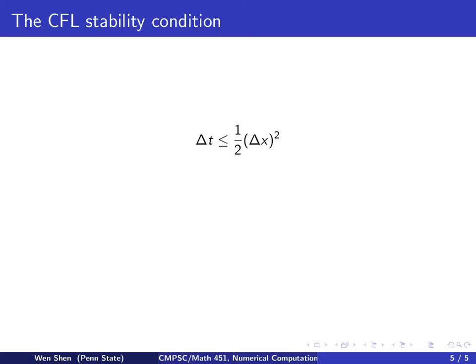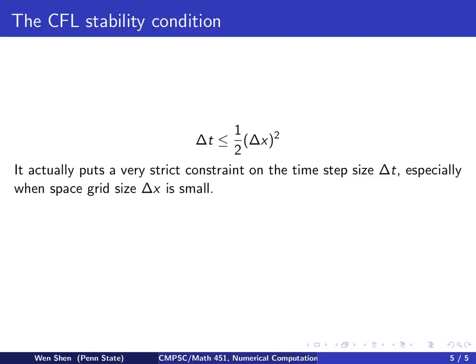Once Δx is given, then you cannot choose Δt too big. So we realize that this actually puts a very strict constraint on Δt, especially when Δx is small.